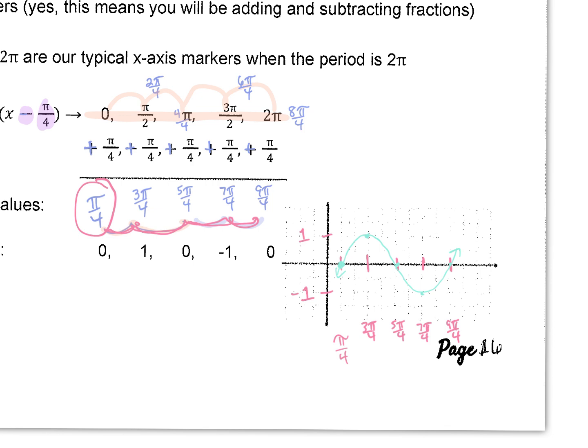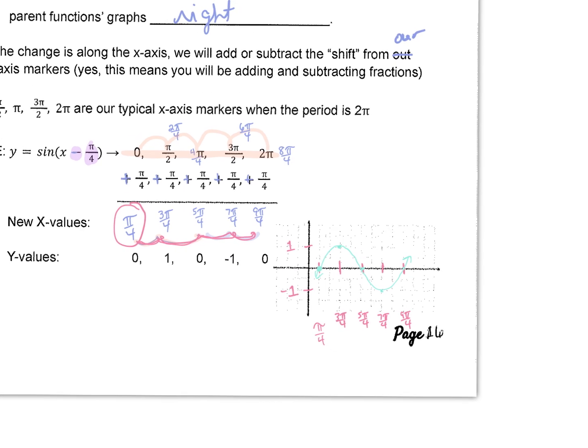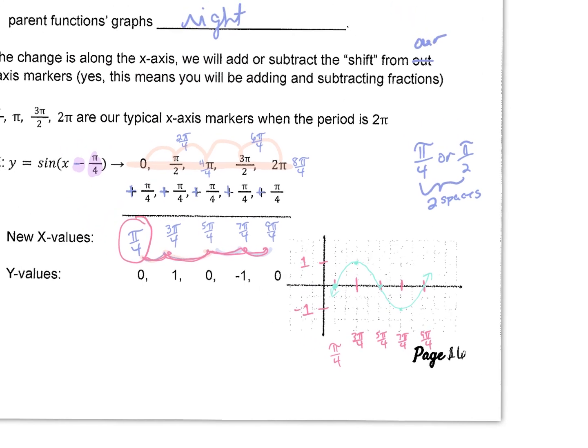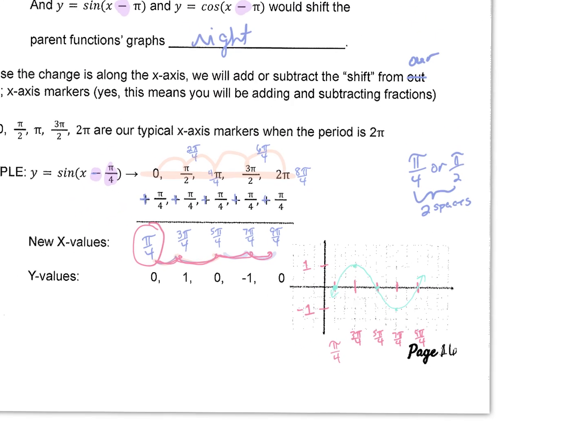So in general, I want to kind of put a note here. I didn't do this first period and I'm wishing now that I had. If you have graphs that are a pi over 4 or a pi over 2, where you're adding or subtracting a pi over 4 or a pi over 2, the spacing that you're going to want to use between is two spaces for your x-axis markers. The spacing is going to be a little bit different for this next example that we look at.